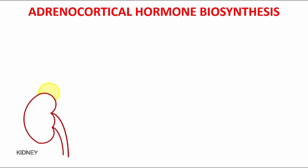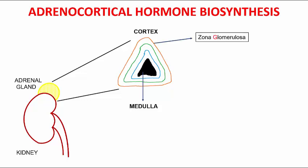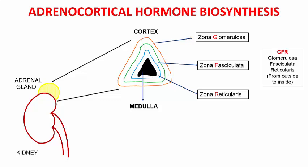These hormones include steroid hormones and catecholamines. Looking at the cross-section, the adrenal gland is formed of an outer cortex and an inner medulla. The outer cortex is subdivided into three zones: zona glomerulosa, zona fasciculata, and zona reticularis. We can remember this by the mnemonic GFR, from outside to inside.